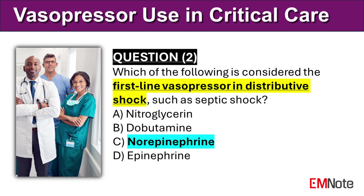The correct answer is C. Norepinephrine, or Levophed, is considered the first-line vasopressor in distributive shock, such as septic shock.